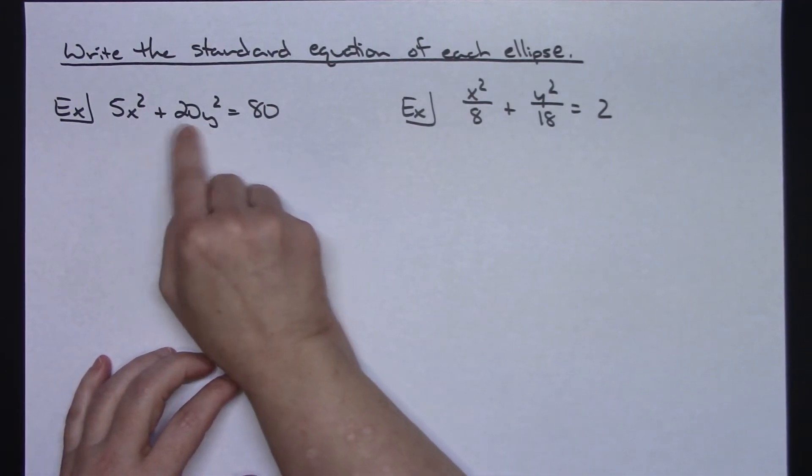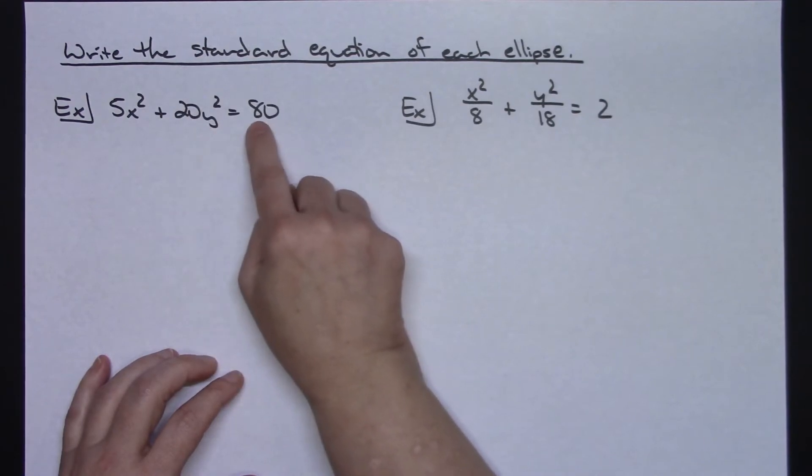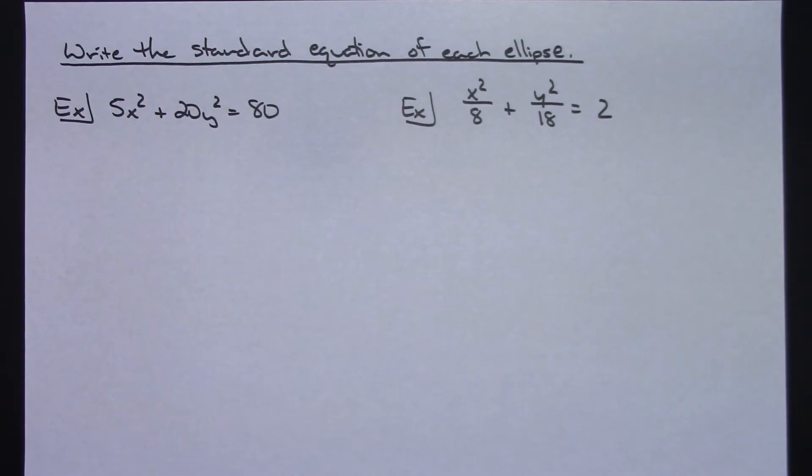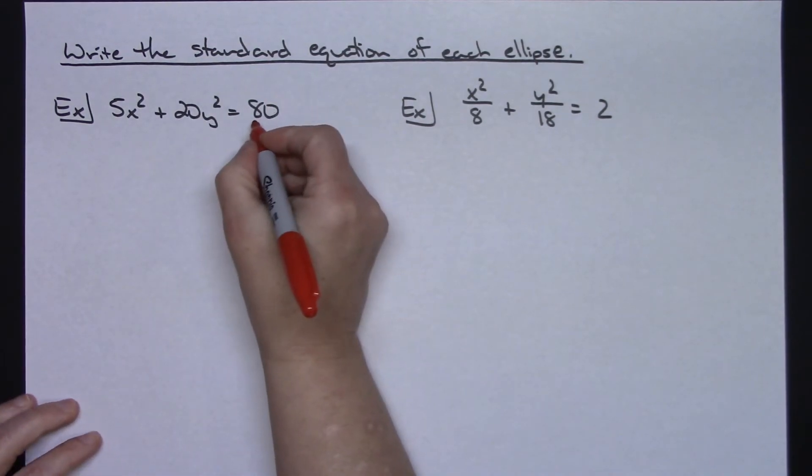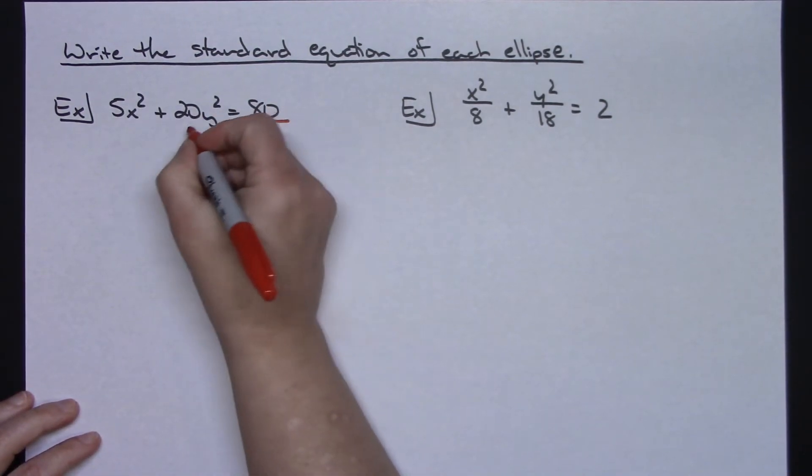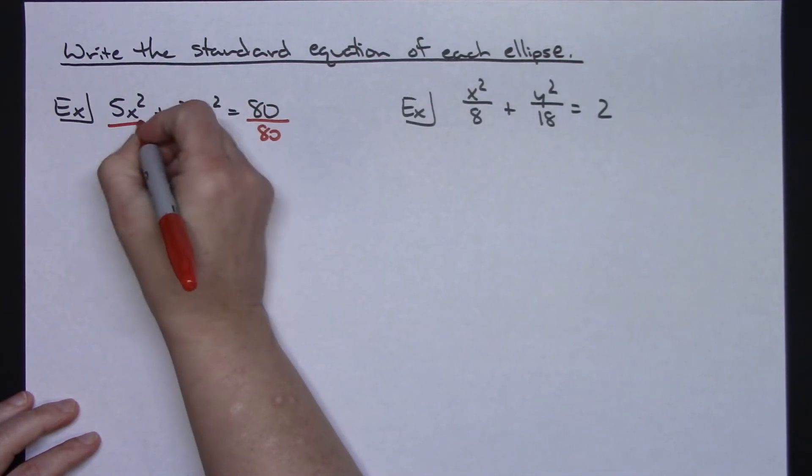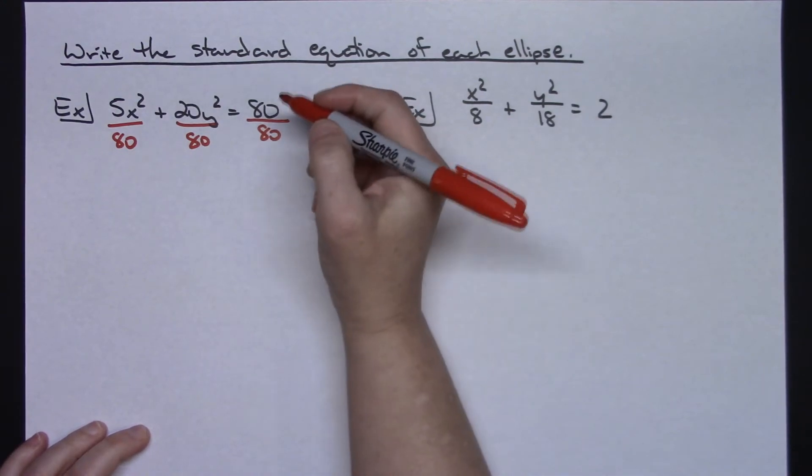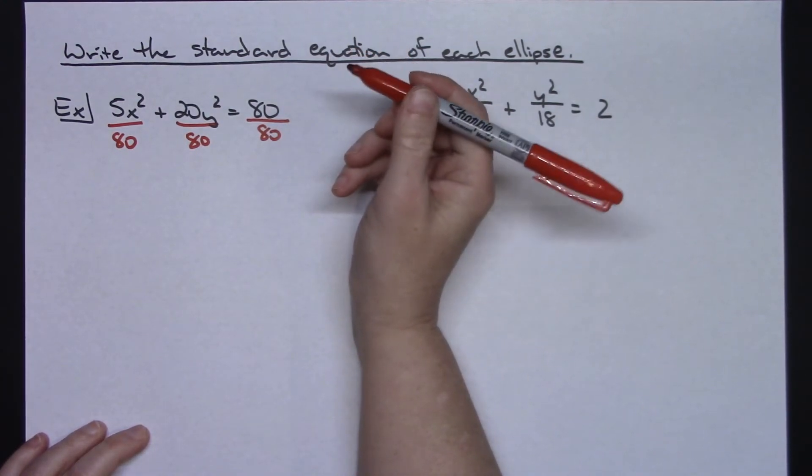So you're going to focus on, how can I get this to be 1? And you know you're going to have to have some fractions over here. If I take 80 and divide by 80, 80 divided by 80 is going to give me 1. So that's how I'm going to choose what I'm going to divide by. So on this one, I'm just going to divide through by 80. Reduce fractions as necessary.